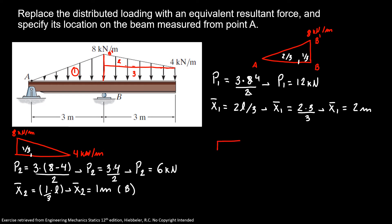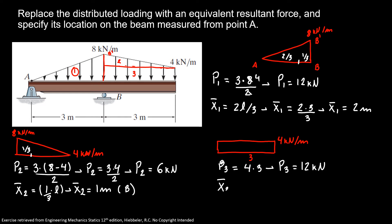And finally, our third area is our rectangle, which has a base of 3 and a height of 4 kN/m. So my load 3, P₃, is equal to 4 times 3. So P₃ is equal to 12 kN. Our x̄₃ is L over 2, so x̄₃ is equal to 1.5 meters measuring from B as well.